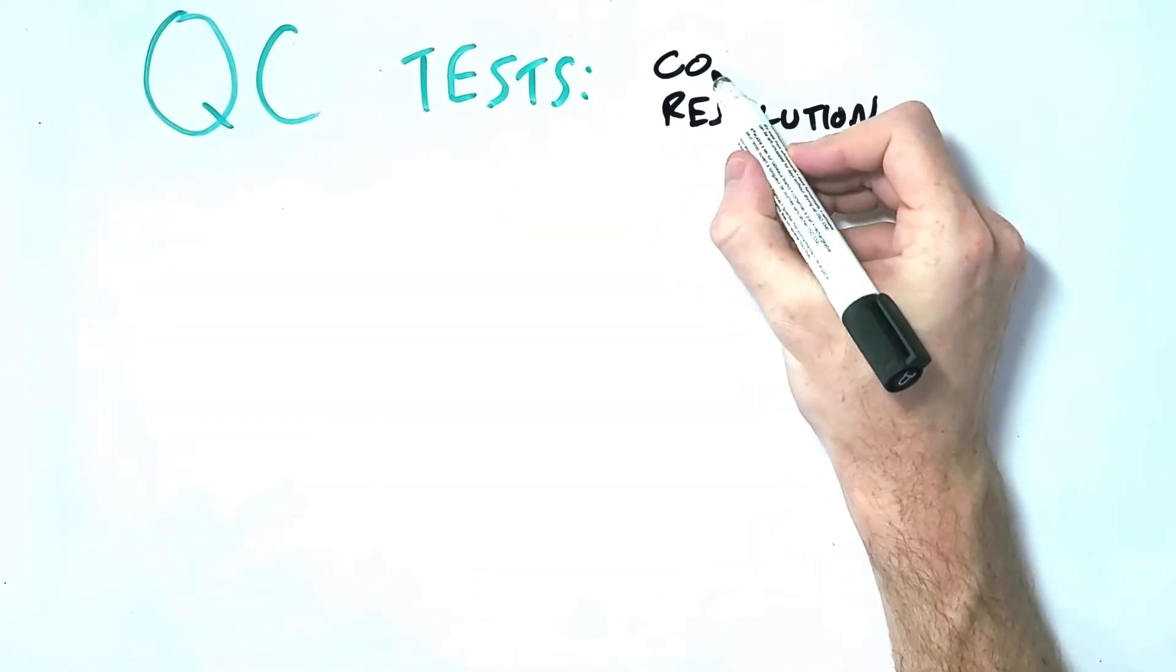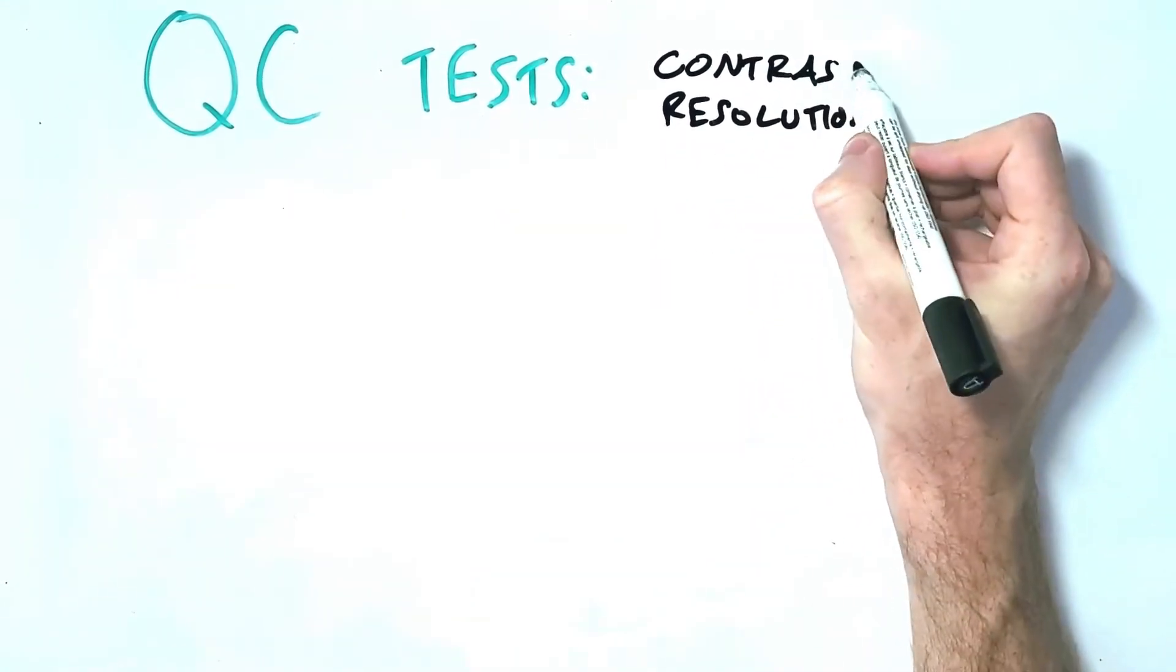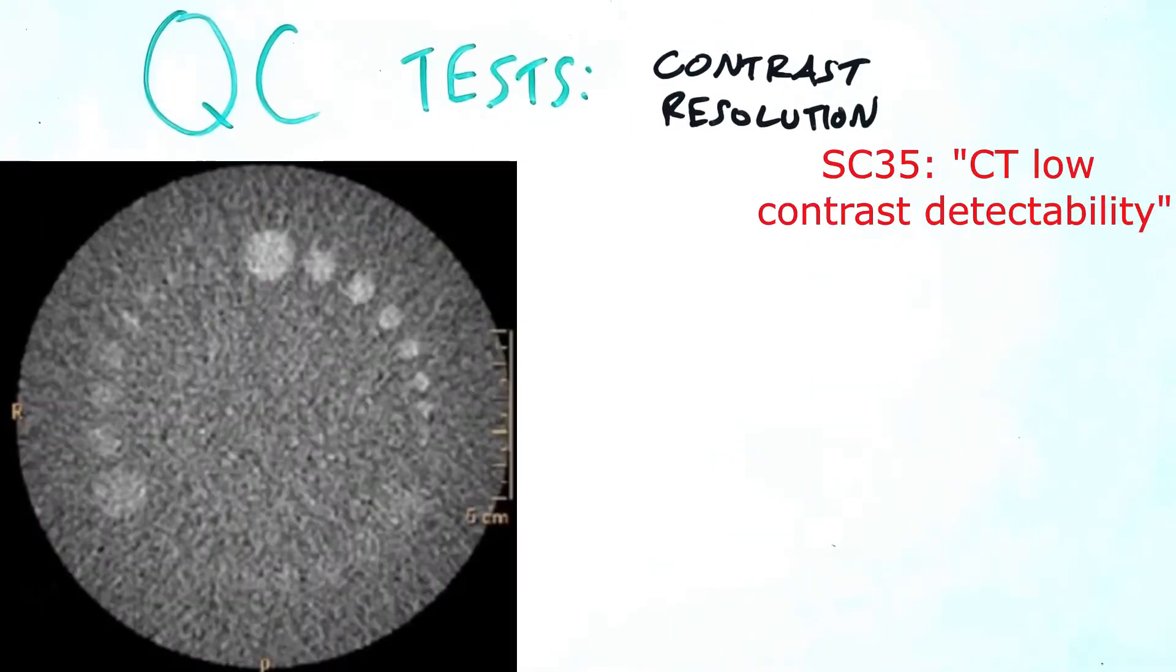Next up, we have contrast resolution. Contrast resolution is the ability to resolve between two objects which only have a slight difference in density. So this phantom has several regions with a spectrum of similar densities in it, or several regions of decreasing size with densities very close to the density of their surroundings.